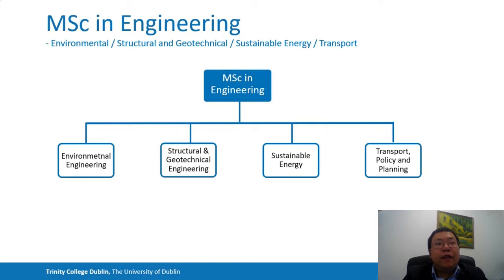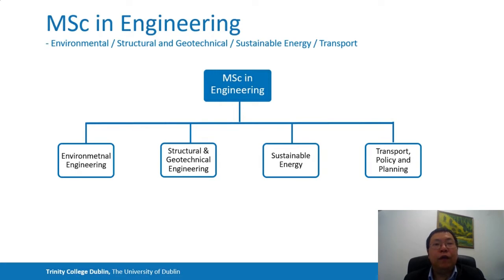The MSc in Engineering is designed to offer postgraduate students the opportunity to obtain a specialist qualification in one of the four areas of the civil engineering discipline: Environmental Engineering, Structural and Geotechnical Engineering, Transport Engineering, and Sustainable Energy Engineering. In addition, the course offers students the opportunity to obtain knowledge in complementary subject areas within civil engineering.